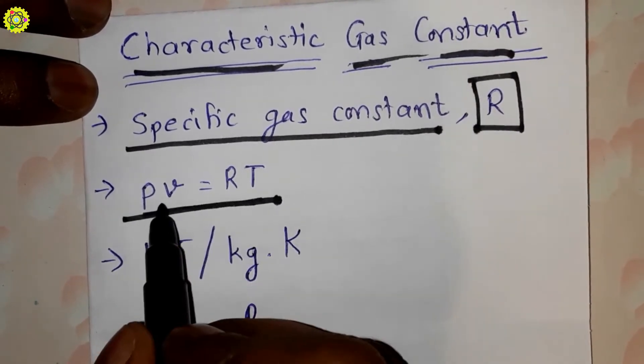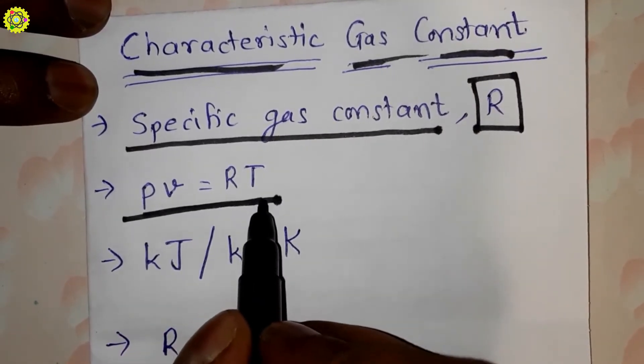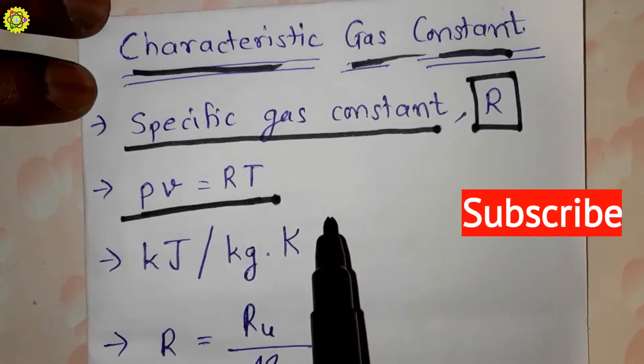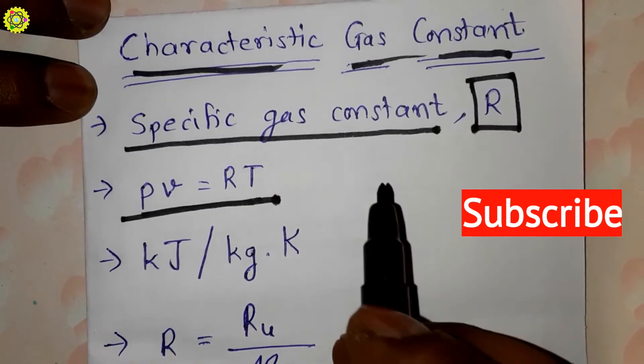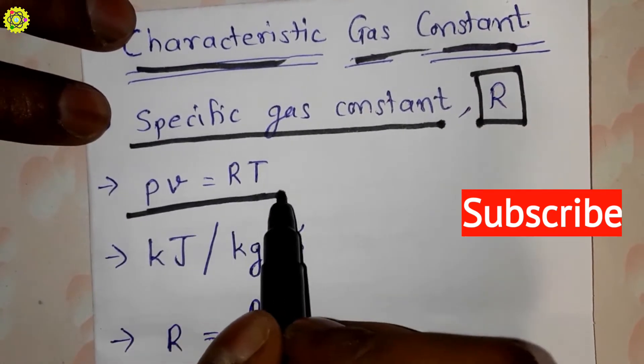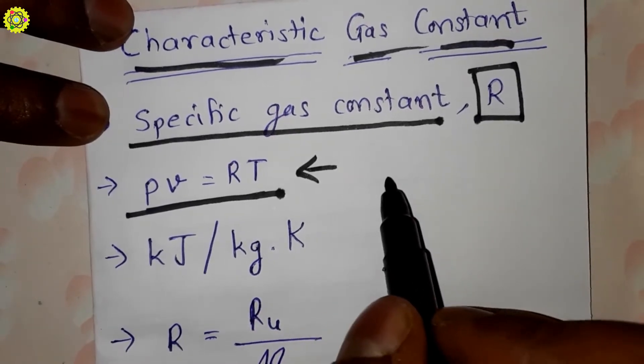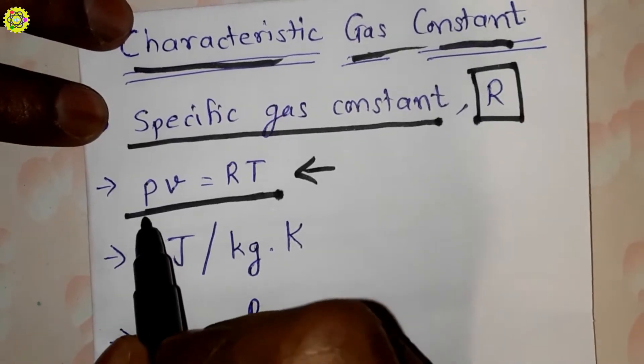Here, pv equals RT is an ideal gas equation, or you can call it as a characteristic gas equation. This ideal gas equation or characteristic gas equation has terms like: